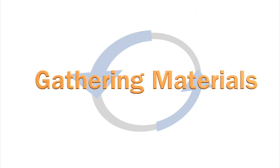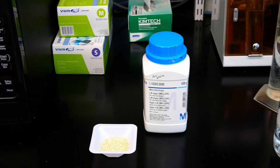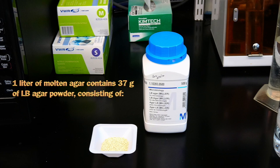To begin the plate pouring process, we'll gather all of our necessary materials. First, we have our LB agar powder. For every liter of molten agar that we make, we'll measure out 37 grams of pre-mixed LB agar powder consisting of 5 grams of peptone,